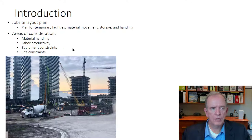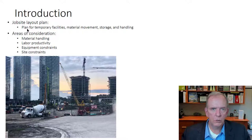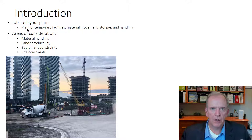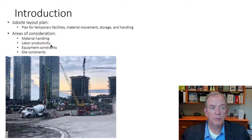We think about overall site logistics in components. One is obviously the job site layout — we need a plan for how we're going to set up temporary facilities: where the trailer is going to be, the offices for the management team. How are we going to order material, where will we place it when it arrives, how do we coordinate with trades so material from one trade doesn't get in the way of another? Areas of consideration include material handling, labor productivity, equipment constraints, and site constraints — we'll cover these in lectures 5A and 5B.